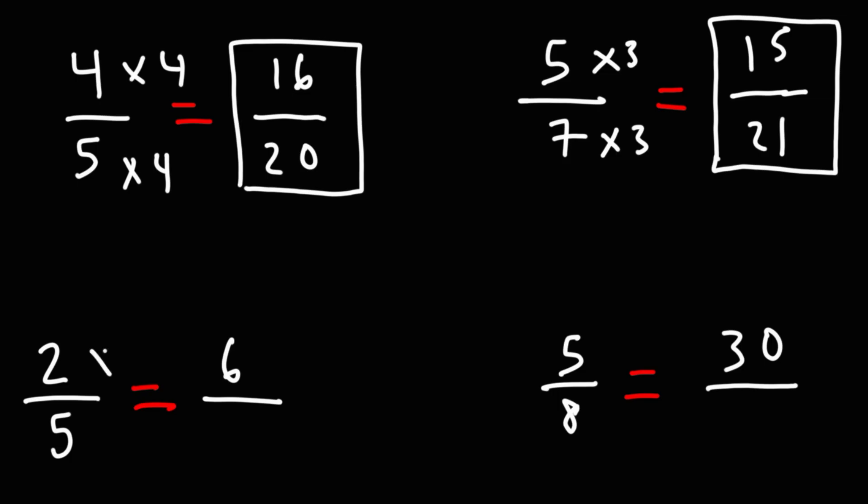Now for the next example we're missing the bottom number. 6 divided by 2 is 3, so to get 6 from 2 we got to multiply by 3, which means we need to multiply the denominator by 3 as well. 5 times 3 is 15, so 2 over 5 is equivalent to 6 over 15.